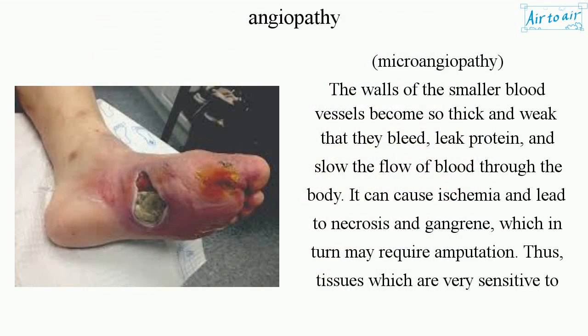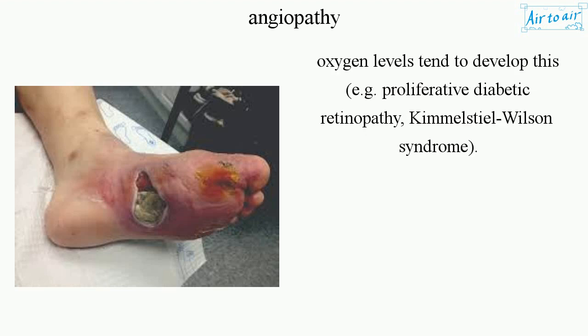Microangiopathy: The walls of the smaller blood vessels become so thick and weak that they bleed, leak protein, and slow the flow of blood through the body. It can cause ischemia and lead to necrosis and gangrene, which in turn may require amputation. Tissues which are very sensitive to oxygen levels tend to develop this, e.g. proliferative diabetic retinopathy and Kimmelstiel-Wilson syndrome.